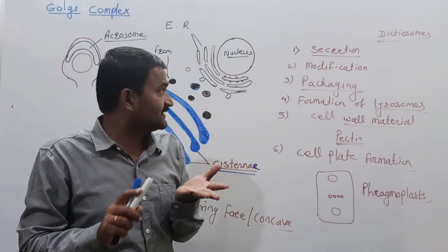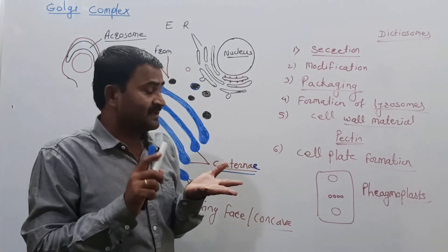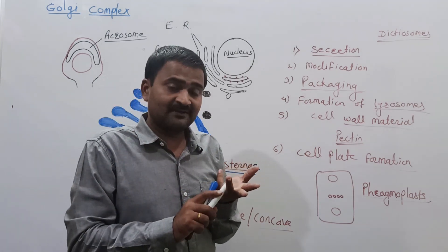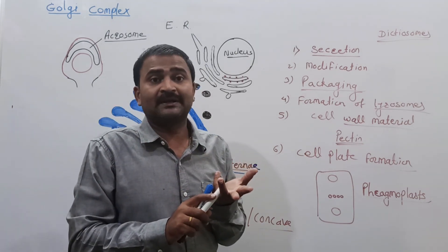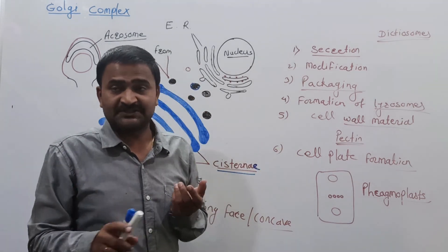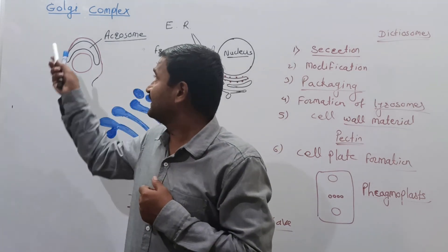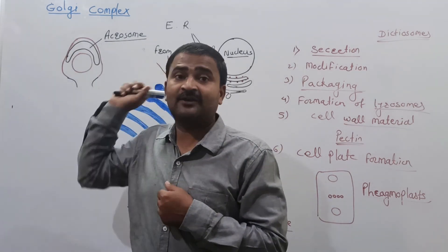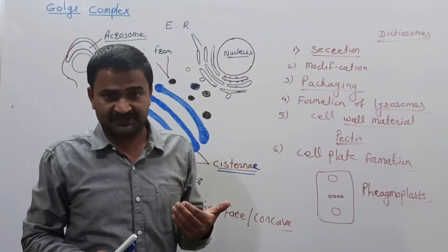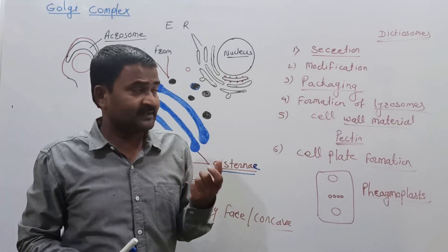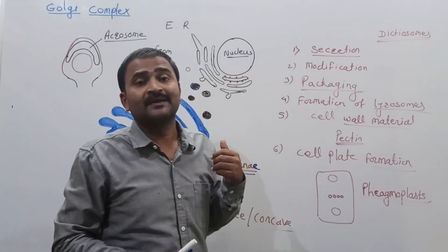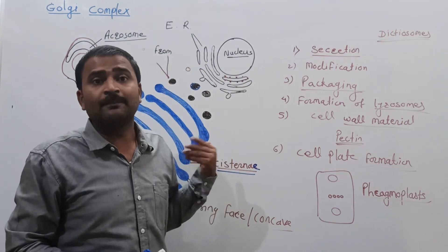To summarize the functions of the Golgi complex: it is involved in secretion of materials, packaging of secretory material, formation of lysosomes, synthesis of wall materials, cell plate formation during cell division, and formation of the acrosome in sperm.